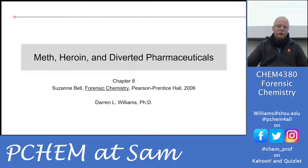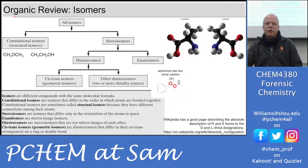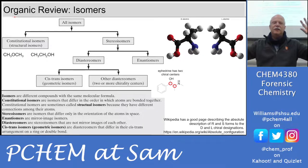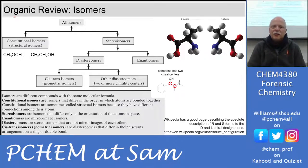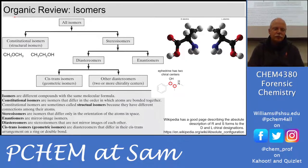We'll be looking at the various aspects of the drug trade — meth, heroin, and diverted pharmaceuticals — and then looking at the kind of chemical evidence you might receive in the crime lab. There's a bit of review because a lot of these substances are chiral, so let's go through the different kinds of isomers. Constitutional isomers, like dimethyl ether versus ethanol, have the same chemical formula but the oxygen is placed in different positions.